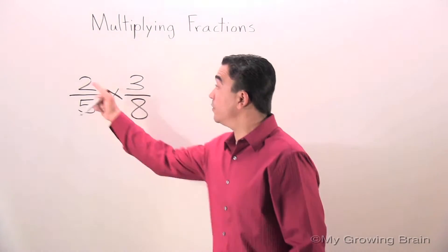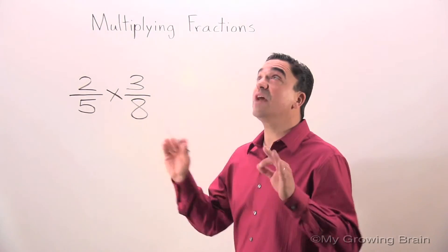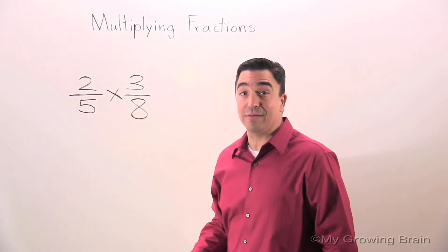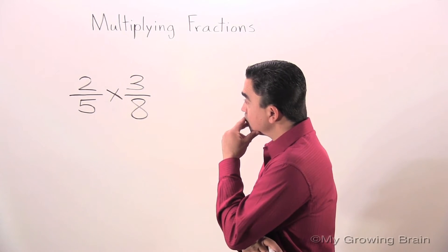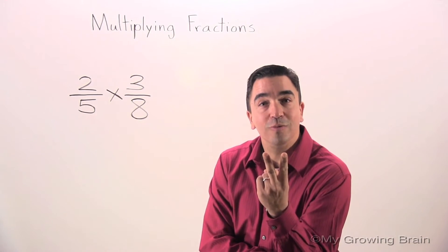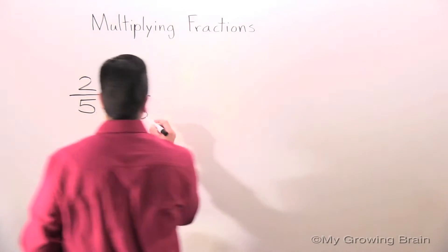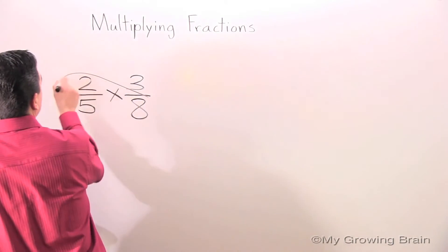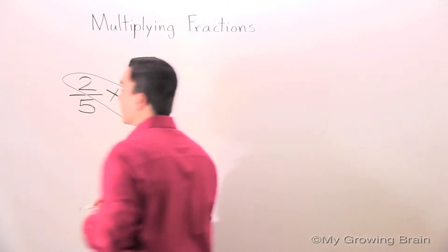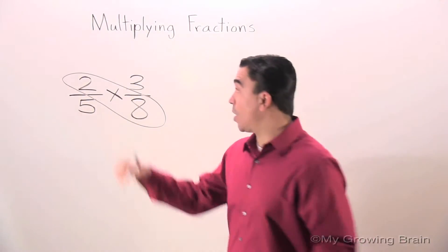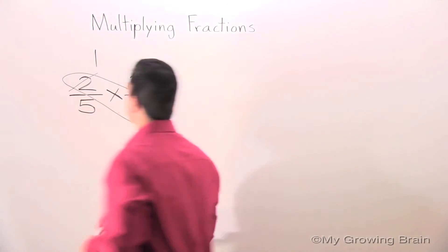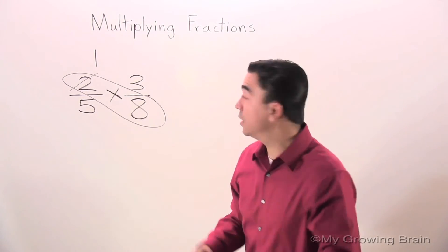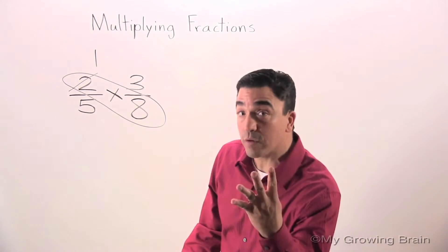Now I'm going to move on to 2 and 8. I want to think of a number that can go into 2 and 8 that's greater than 1 evenly. 2. Let's do it. 2 can go into 2 one time. 2 can go into 8 four times.